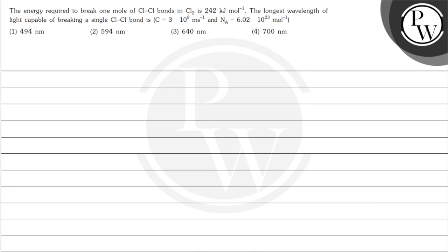we have given that the energy required to break one mole of Cl-Cl bonds in Cl2 is 242 kJ per mole, and we need to find the longest wavelength of light capable of breaking a single Cl-Cl bond. The question provides the speed of light and Avogadro's number.